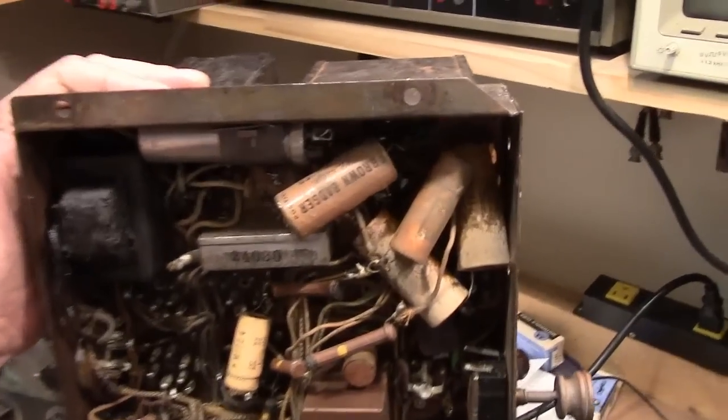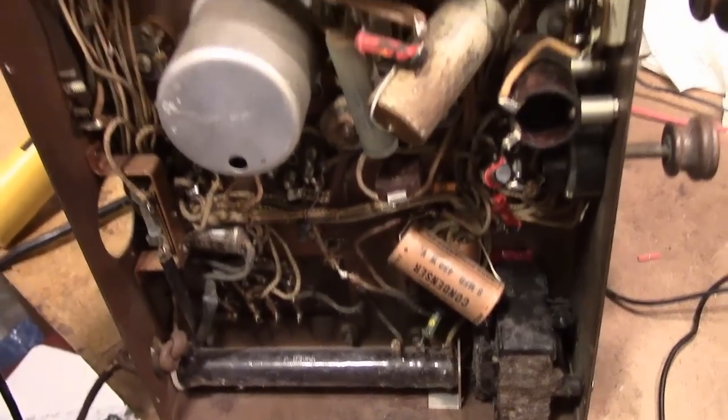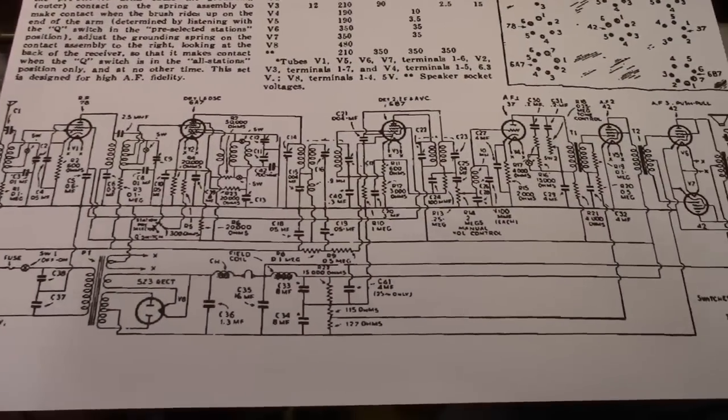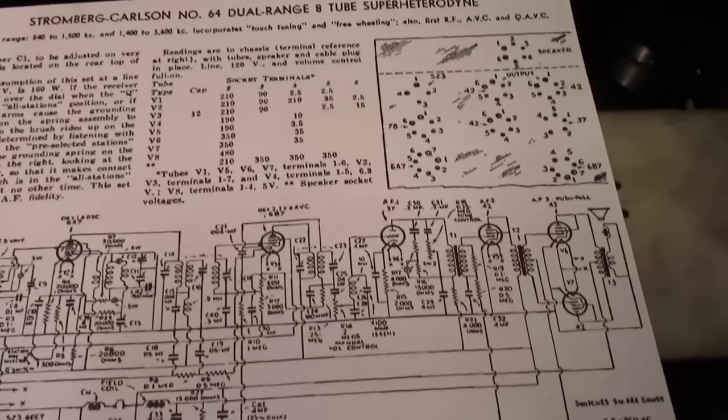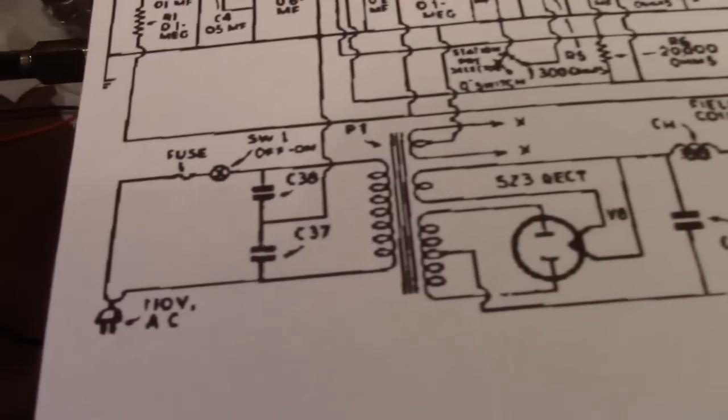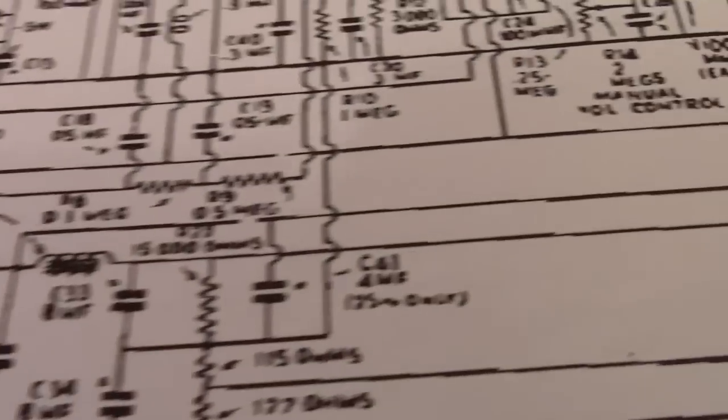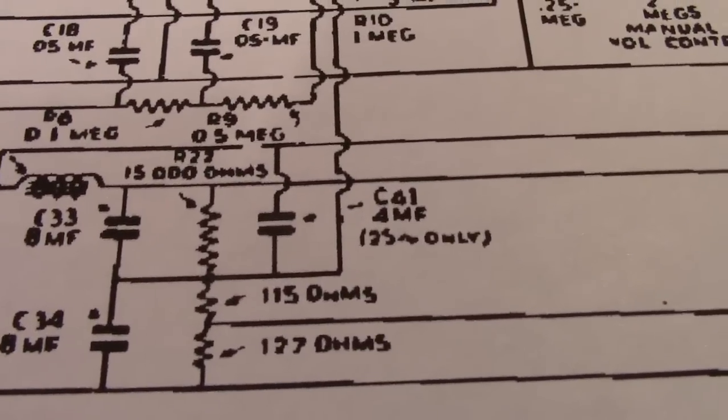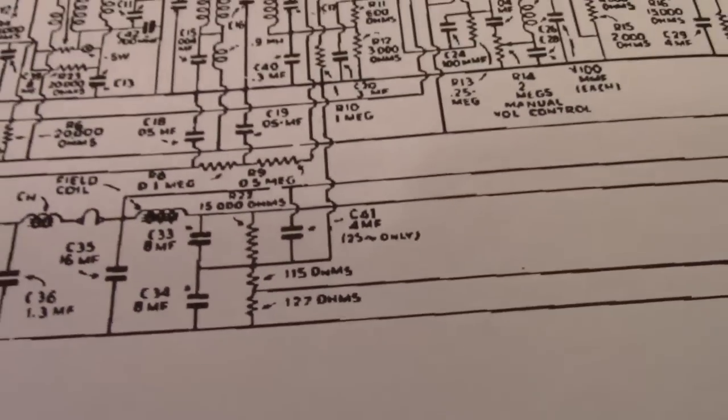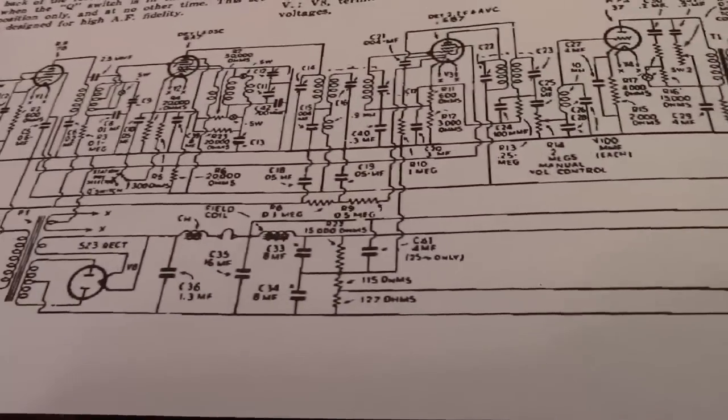Hey guys, I'm taking a closer look inside the Stromberg Carlson Model 64. Thanks to a very helpful Antiqueradio Forum member, I now have a legible schematic and some service tips that were posted way back in the day in a radio magazine. I'm looking at the power supply and all of these caps. Notice there are a few notes on the schematic that say 25 hertz only, and that line going to that 4 microfarad cap. Some of these components are optional only if you have a 25 hertz environment. I'm guessing that this is not, that this is a 60 hertz model.